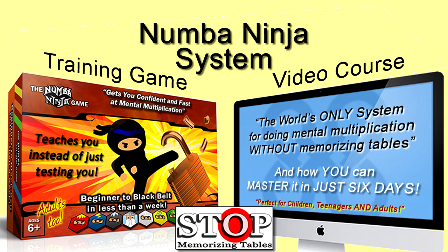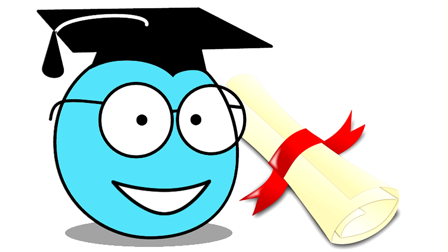It also comes with a digital version of my number ninja game which is a great way to have fun practicing your new skills by playing the game alongside the course. You can get fully skilled in all of your tables up to 12 times 12 in six days or less with just a few minutes of playing each day. And then you get awarded a certificate to show that you are officially a black belt number ninja.